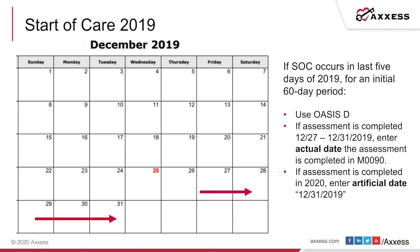For example, if the patient started on December 27th, 2019, we need to do an OASIS D. Although we have a five-day window to complete the assessment — day one is the 28th, day two the 29th, day three the 30th, day four the 31st — we actually have until January 1st to complete the OASIS assessment. However, in this instance, we do not want to put M90 with a date of 1-1-2020; we would use an artificial date of 12-31-2019. These are special guidance instructions from CMS for the OASIS D and D1 transition with PDGM.